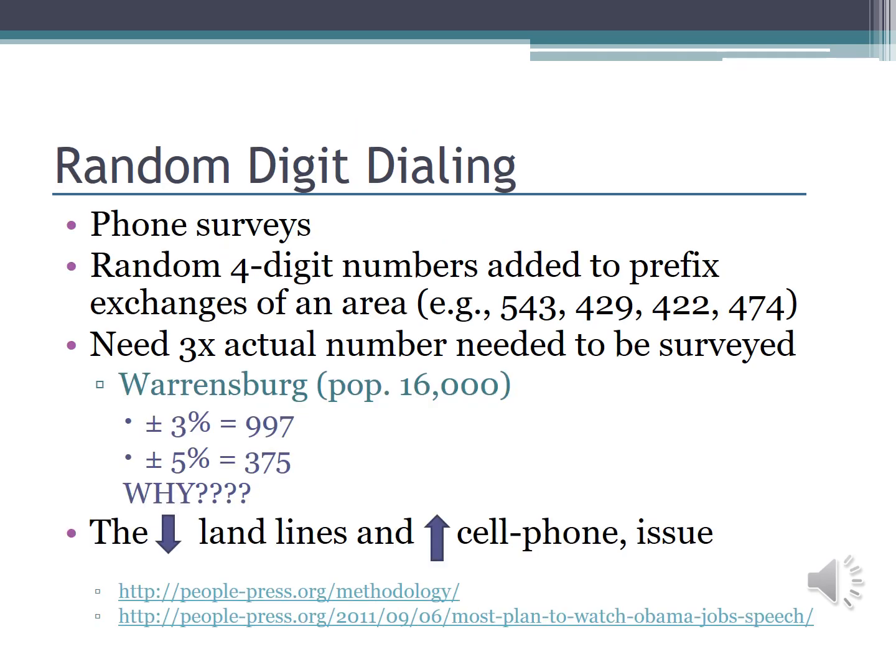Another similar way of approaching this is through random digit dialing, which is obviously used in phone surveys. In this method, you use random four-digit numbers added to the prefix in the area or areas you are surveying. You'll need to get about three times the numbers you'll need for the survey in this case, because more and more people are getting rid of their landlines and going to cell phones. Check out the two websites listed here — the first takes you to the Pew Research Institute for an explanation of U.S. survey research, and the second shows how they reported on a survey.